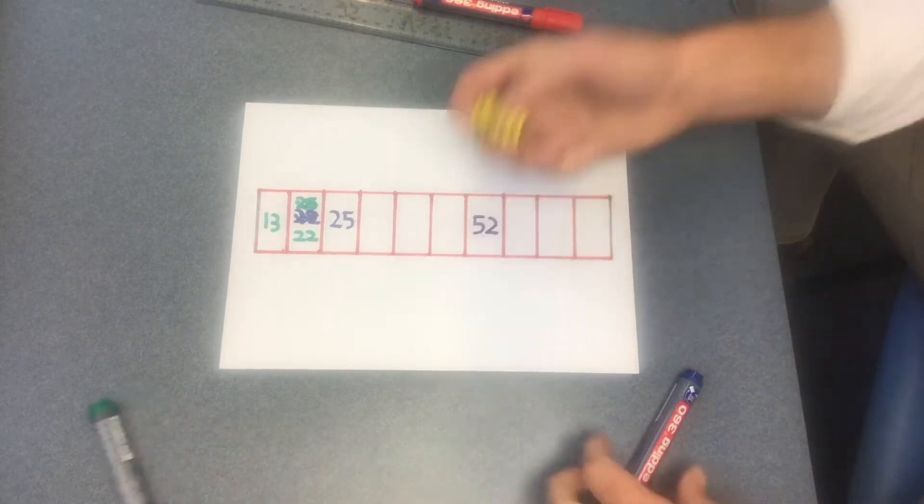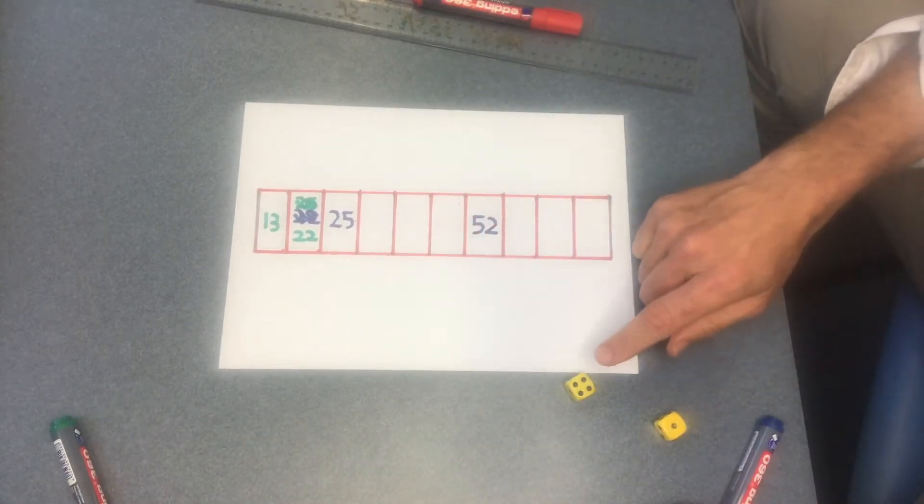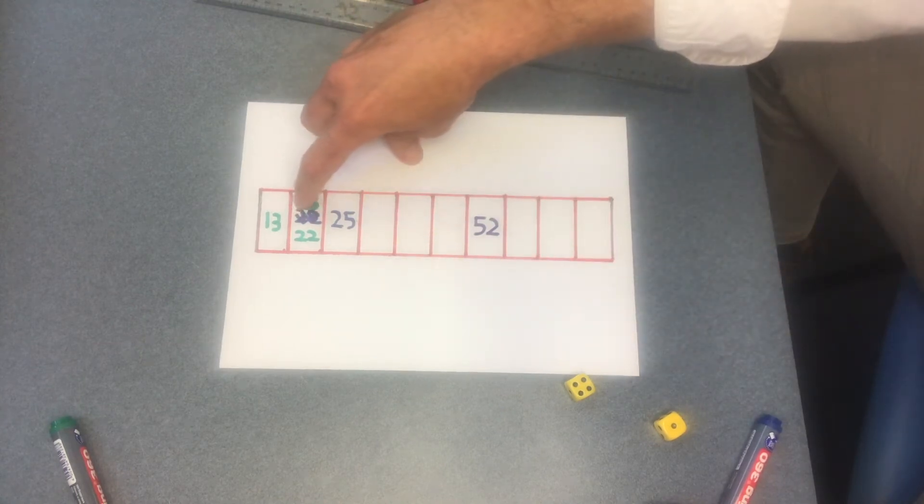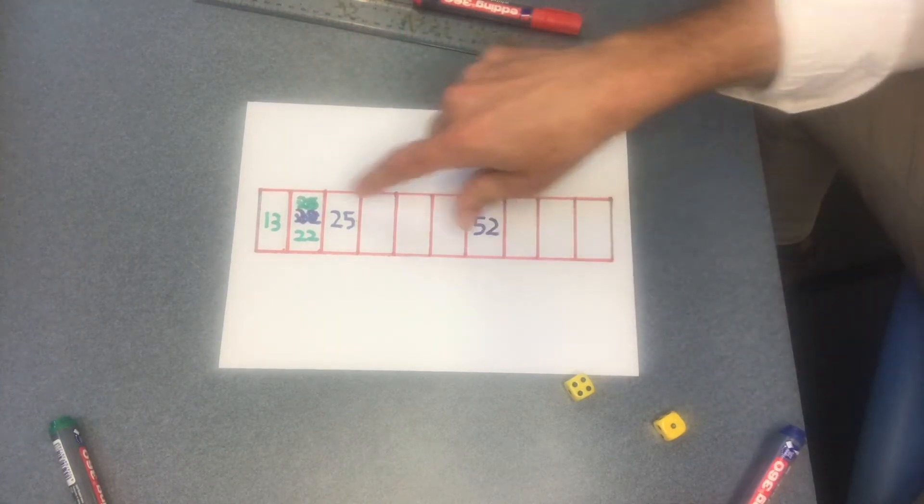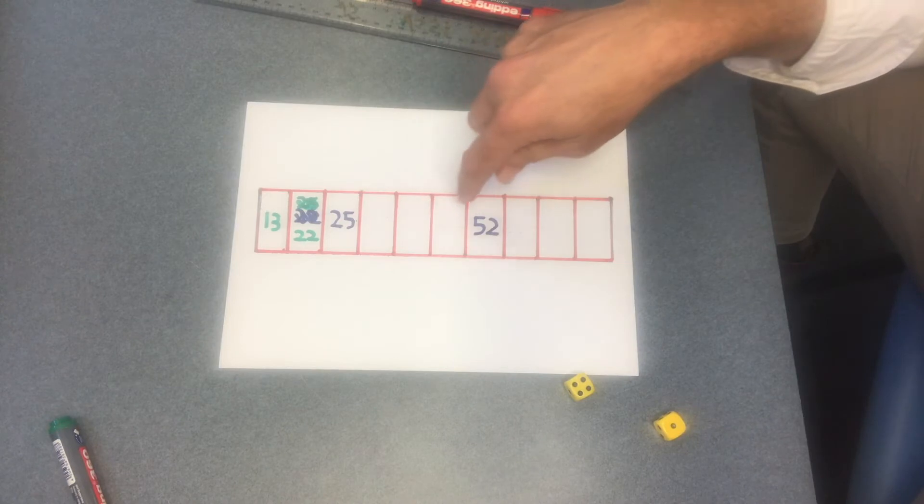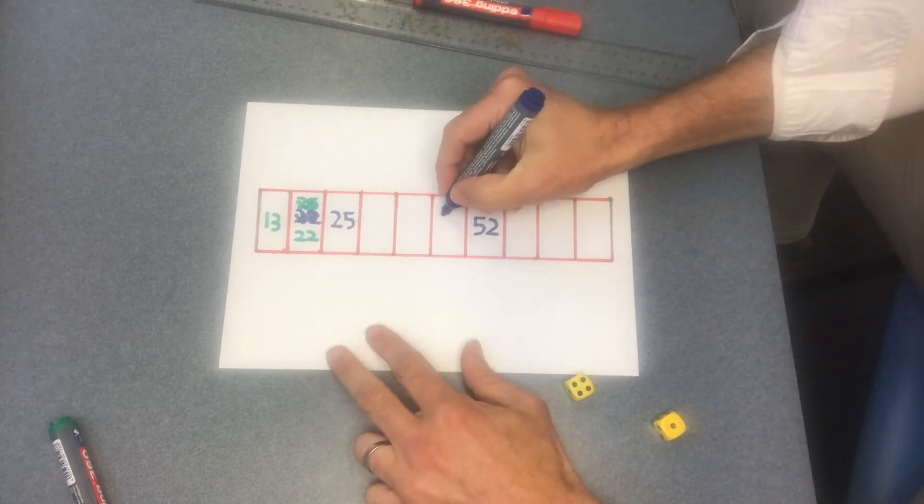Then it is the blue marker person's shot again and they've got one and four. Well they can't put anything in there for 14 because there's no space between 22 and 13 on the board, but 41, yeah I could put it between 25 and 52, so that's what I'm going to do. I'm going to put 41 here.